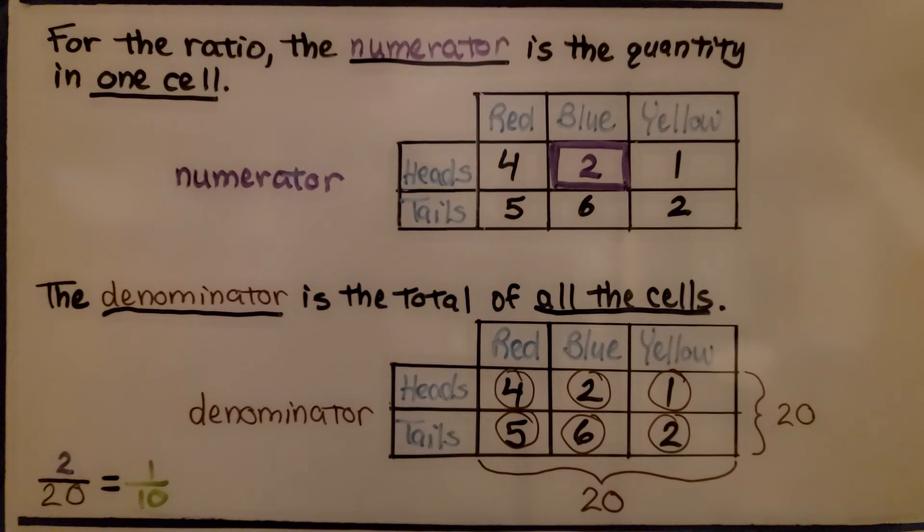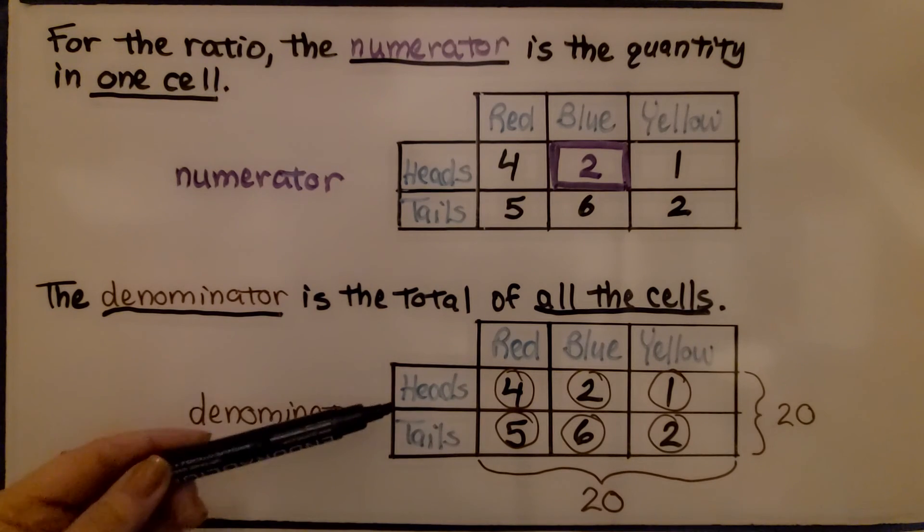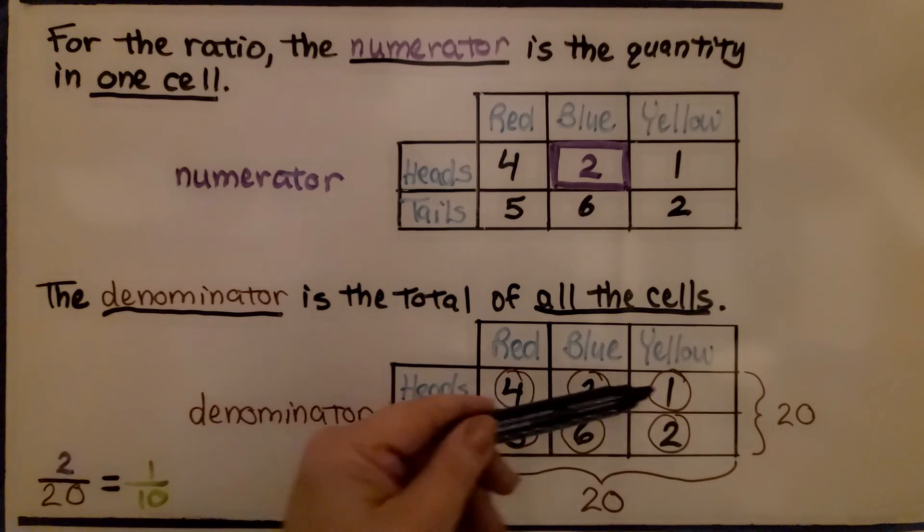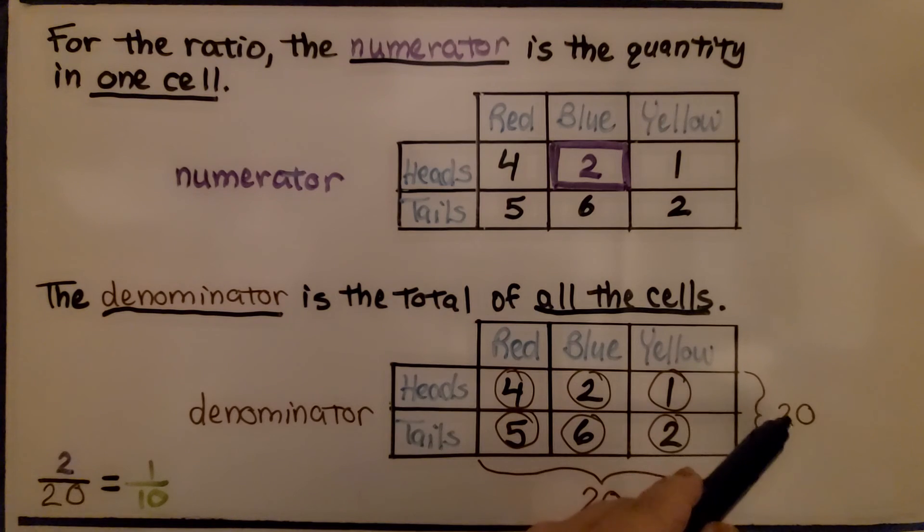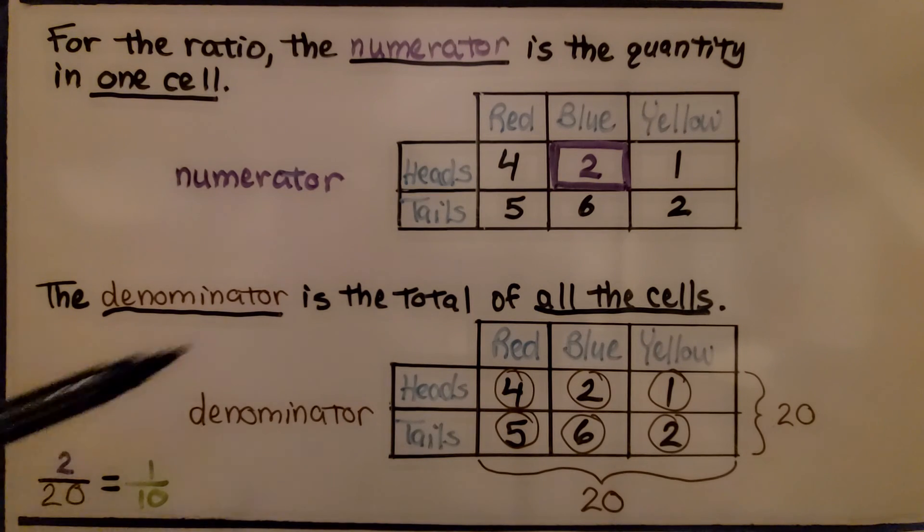For the ratio, the numerator is the quantity in one cell. The denominator is the total of all the cells. As we discussed before, we can total all the cells by adding the rows, which equals 20 in this case, or we can add the columns, which will also equal 20. We get 2/20, which simplifies to 1/10.